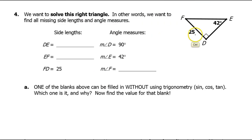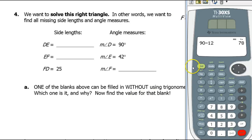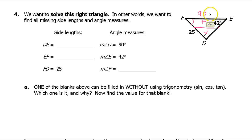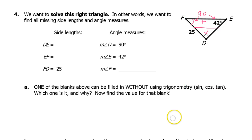Solving a right triangle means finding all missing sides and missing angles. It would be very easy to find the missing angle right here because we already have two out of three angles — we can use the fact that all angles add up to 180. Or, since it's a right triangle and we already have 90 degrees, the other two angles have to add up to 90 degrees as well. So I just look at the two acute angles, knowing they add up to 90, and subtract from 90. So 90 minus 42 gives me 48 — the measure of angle F is 48 degrees.